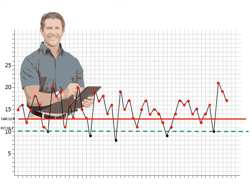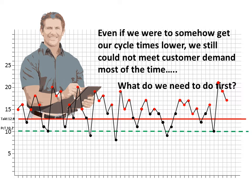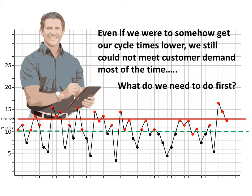Now that you're back, one thing that we know is that with all of these red data points above and therefore not meeting planned cycle time, we won't be able to produce fast enough to meet customer demand. Even if we do somehow get our cycle time quicker and therefore lower on the graph, given the amount of variation we have in the cycles, we won't produce fast enough to meet customer demand. A tempting assumption to make is that the process will produce on average to meet customer demand. This is a dangerous assumption because using averages can cause us to neglect or ignore the reasons for the variation itself, many of which can cause enough interruptions and inconsistency in the process that they do more damage than just reduce throughput. It's always better to depict the true variations, compare them to the planned cycle time, and deal with them.